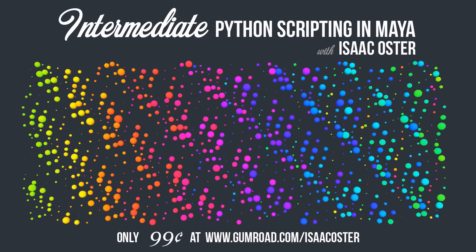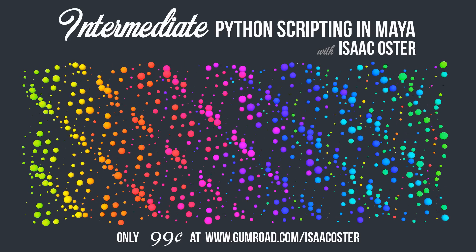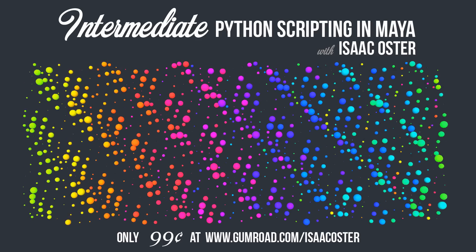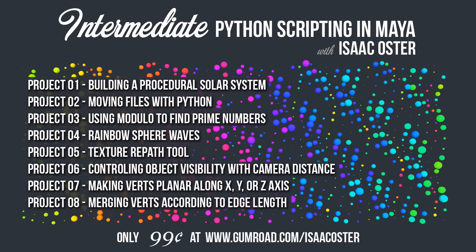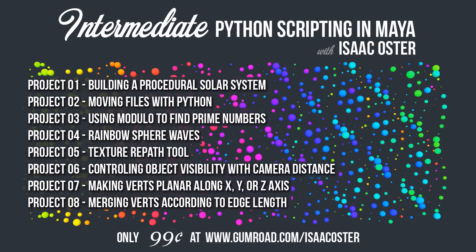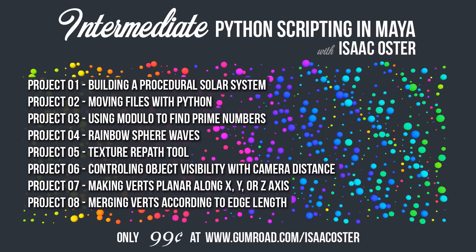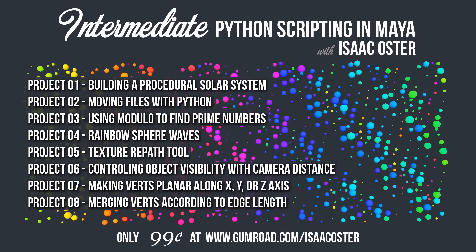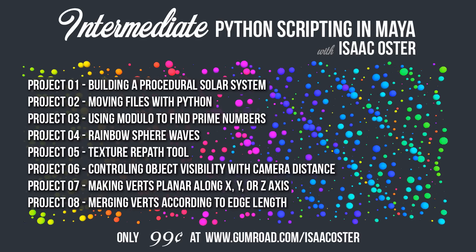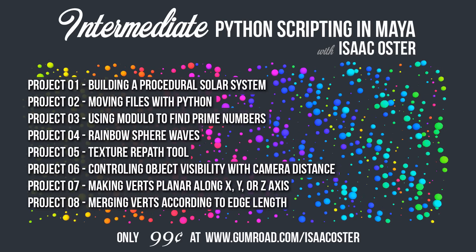I've been working on a new intermediate level tutorial series intended to extend the concepts covered in the original. This new tutorial series, available now for just 99 cents, delves a bit deeper and is oriented around small projects. These concise projects demonstrate important functionality like working with external files, gathering and using scene data, using modulo, optimizing code performance, and querying and manipulating polygonal geometry. After watching these tutorials, you will be well on your way to developing your technical art portfolio, optimizing your own production pipeline, and most importantly, taking control of your very own machine army. I hope you enjoy.